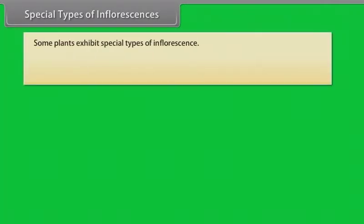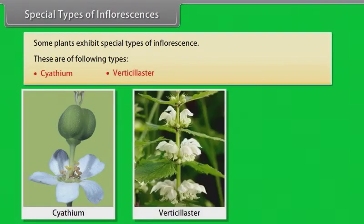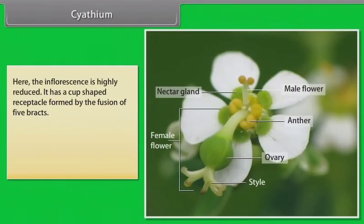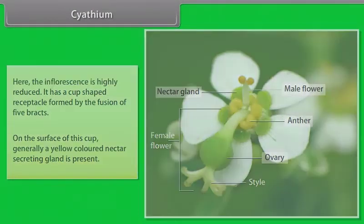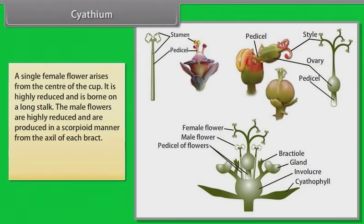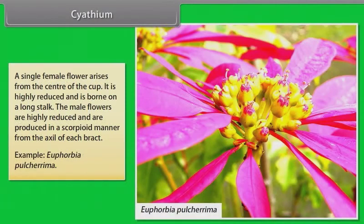Some plants exhibit special types of inflorescence: cyathium, verticillaster, and hypanthodium. In cyathium, the inflorescence is highly reduced and has a cup-shaped receptacle formed by the fusion of five bracts. On the surface of this cup, a yellow colored nectar-secreting gland is generally present. A single female flower arises from the center of the cup, highly reduced and borne on a long stalk. The male flowers are highly reduced and produced in scorpioid manner from the axil of each bract. Example: Euphorbia pulcherrima.